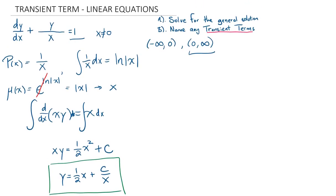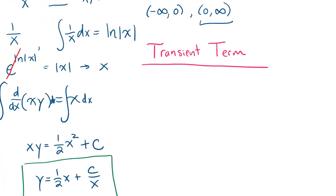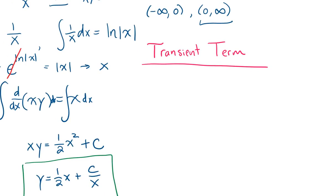Now, the second part said name any transient terms. So what is a transient term? A transient term is simply a term that goes to 0, rather, as x goes to infinity. So as x goes to infinity, this term...